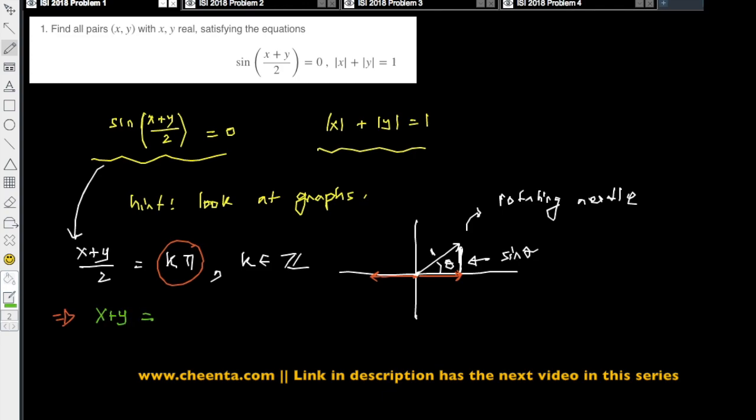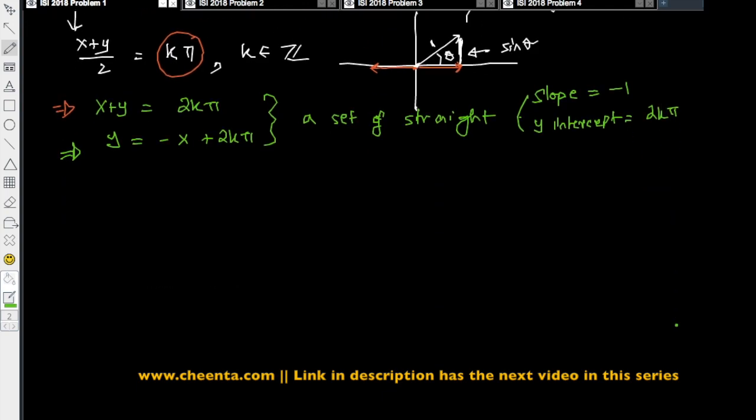So this implies that (x+y)/2, or x+y itself, equals 2kπ, or more importantly, y = -x + 2kπ. What is this? This is actually a set of straight lines. More importantly, all these straight lines have the same slope. The slope is -1, and the y-intercept is 2kπ.